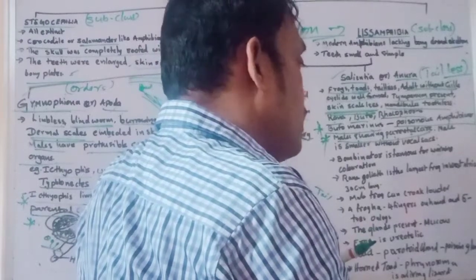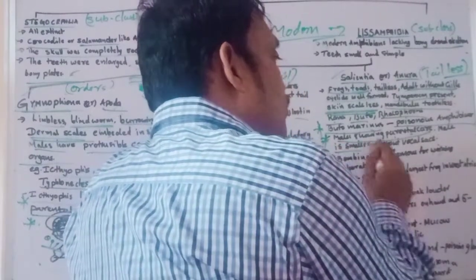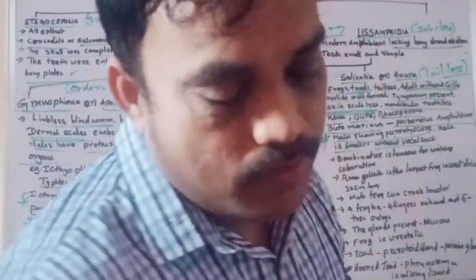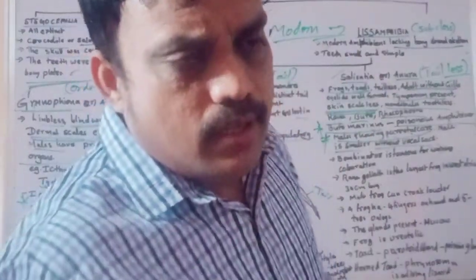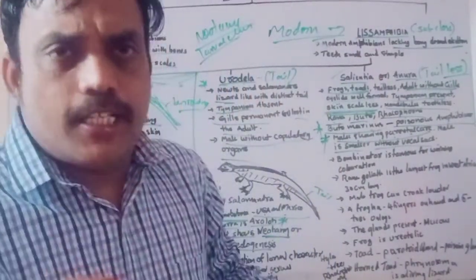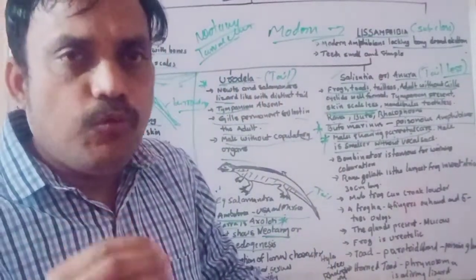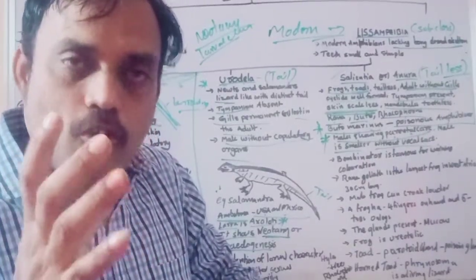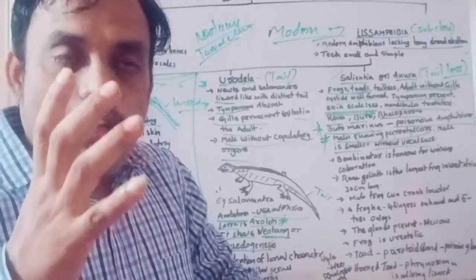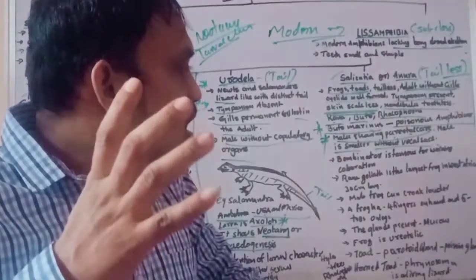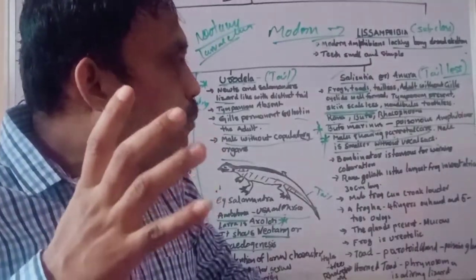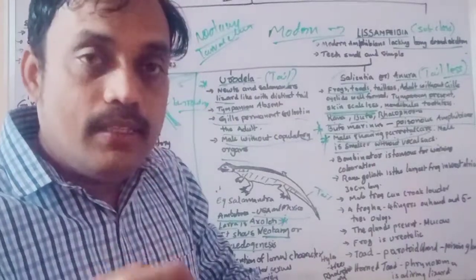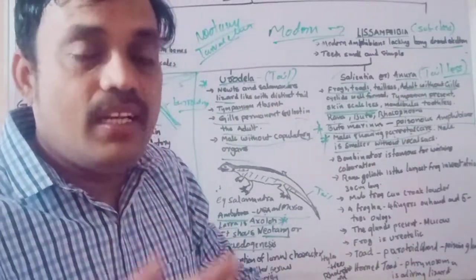A frog's front limbs have four fingers, and the back limbs have five toes. The body surface is covered with mucus glands, always releasing a mucus-like substance. Frogs are ureotelic — their excretory material is urea, like human beings.